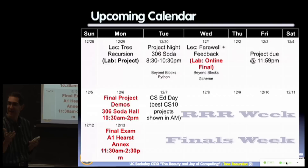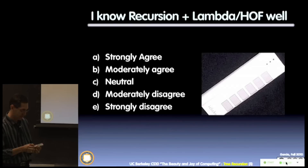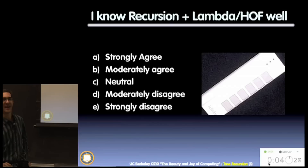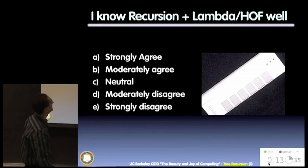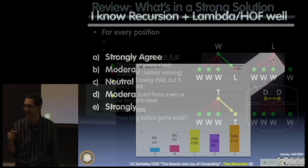The masses have spoken — see how dynamic and adaptive we are. Half review, half project night it is. John's not here, so we can assign things to him. Final clicker question: I know recursion plus lambda and higher-order functions well. Results are in — how about we spend an entire lecture talking about that? Party on.